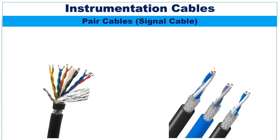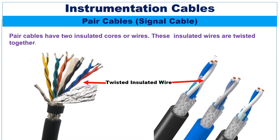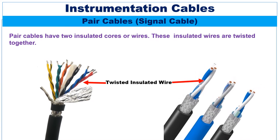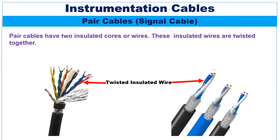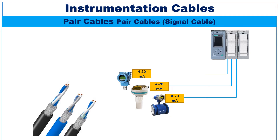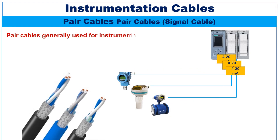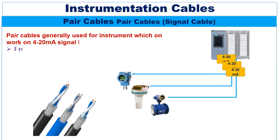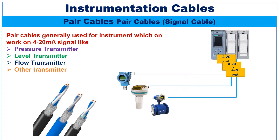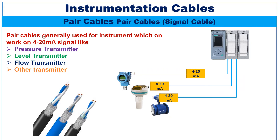Pair cables have two insulated cords or wires that are twisted together. The pair cables are laid between the control system and instruments like pressure transmitters, level transmitters, flow transmitters, etc., which give 4 to 20 mA low current or low voltage signals.